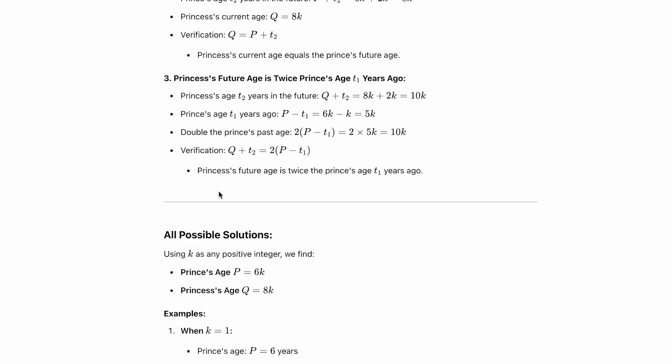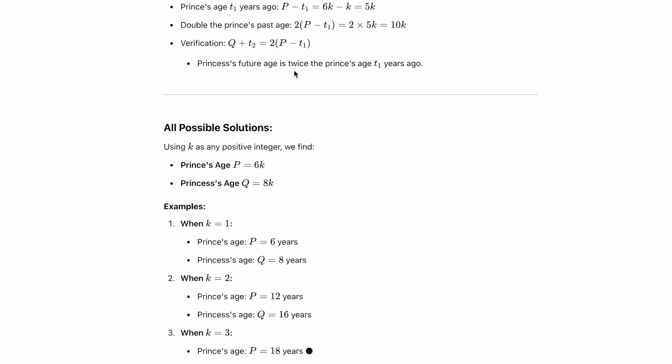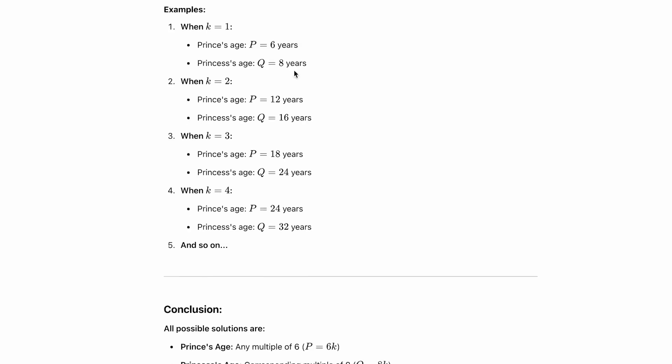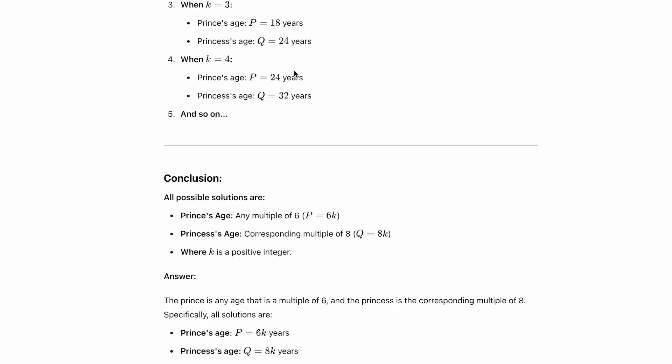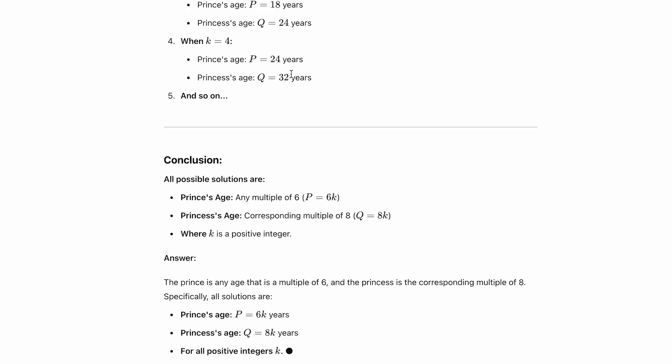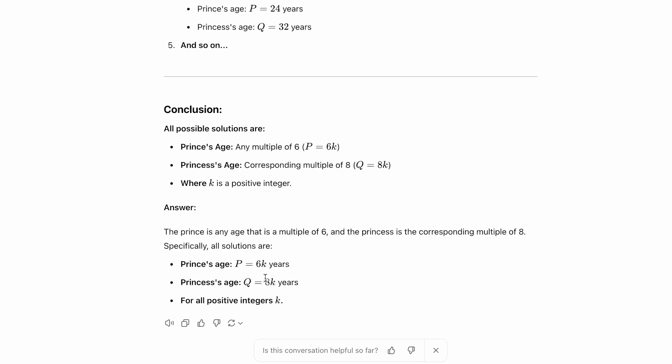We even got a message about verification, and we got the answer: the prince's age is six times k for any natural number k, and the princess's age is eight times k. This is also the correct solution for the problem in that game.